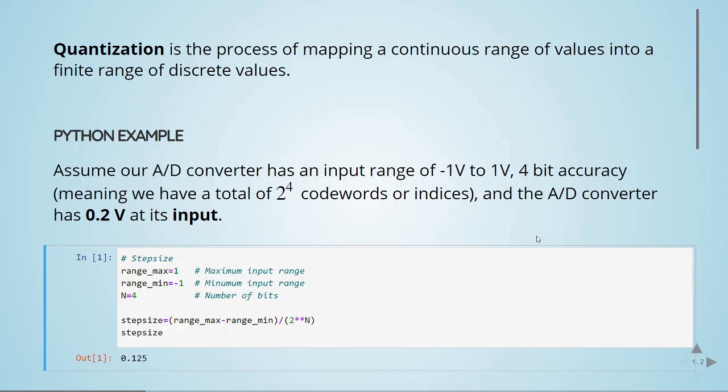We can have here an example where we assume that our analog-to-digital converter has an input range from minus 1 to 1 volt. We are going to use 4-bit accuracy. That means that we have a total of 2 to the power of 4 code words or indices. And we'll see what happens when we have 0.2 volts at the input of the analog-to-digital converter.